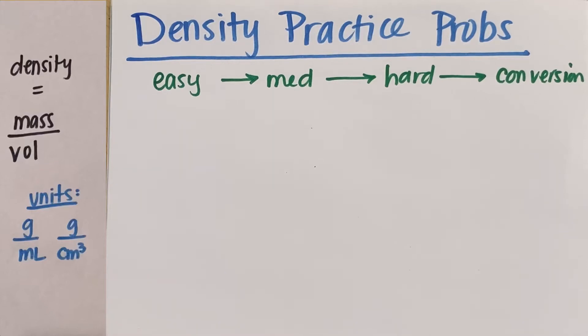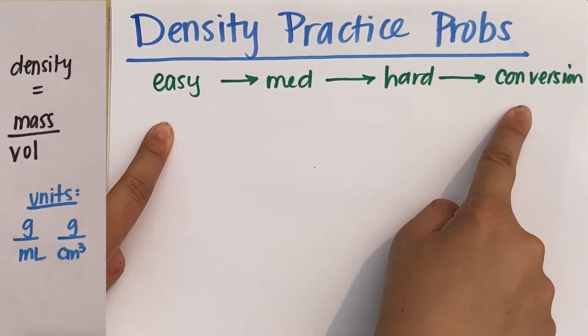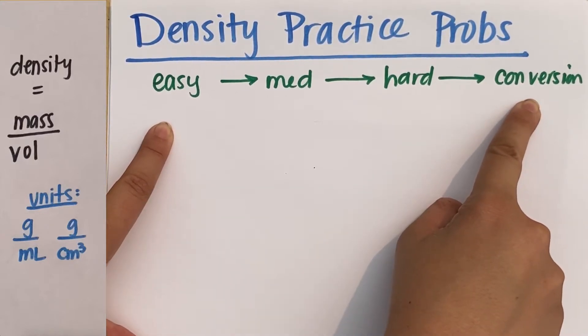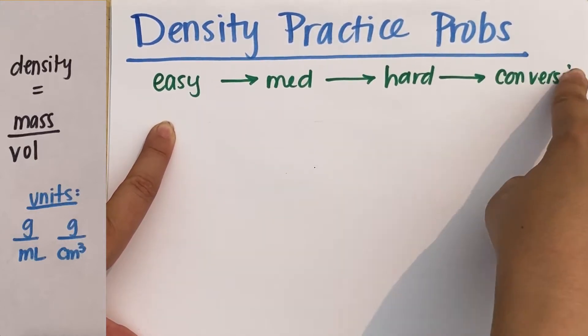We are going to go over some density practice problems. We're going to do some easy, medium, hard, and then using density as a conversion factor, which I think is actually the hardest because you have to think critically about this step.